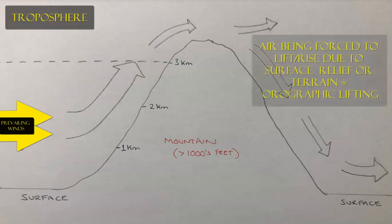We have this orographic diagram, a profile view of a large mountain. I've chosen a mountain that is extremely high in elevation — at the top it's actually 3,500 meters or 3.5 kilometers, which is in excess of around 10,000 feet. This really only applies to terrain that has a high enough elevation to lift the air.